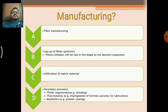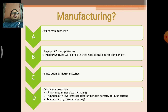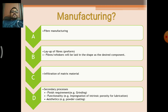The last step is the secondary process, covering finish requirement, functionality, and aesthetics. Aesthetics means the covering part of the material, such as powder coating. Functionality is the impregnation of intrinsic porosity for lubrication purposes. Finishing requirement refers to the grinding section — when we use surface finish in grinding operations, we apply the finish requirement.